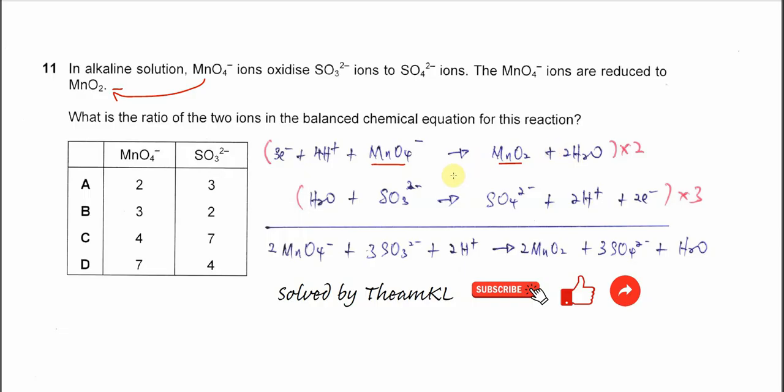Then we continue with another half equation: sulfite oxidized to sulfate. We need to balance the oxygen number by adding H2O on left hand side here. Then we need to balance the hydrogen by adding this hydrogen ion on right hand side, 2H+.